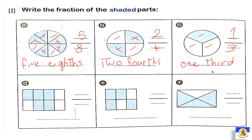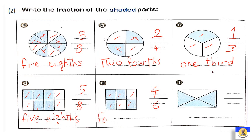The next one: how many parts in all? 1, 2, 3, 4, 5, 6, 7, 8. في عندنا منهم بس 5 shaded. So, it will be 5 over 8. The next one: here, we have 1, 2, 3, 4, 5, 6 in all parts. 4 of them only are shaded. So, it's called 4 over 6. The next one: we have 1, 2, 3 shaded parts over 4. So, it will be 3 over 4.